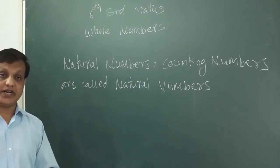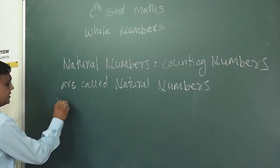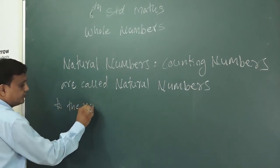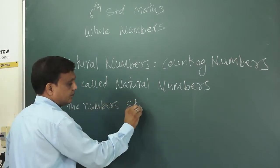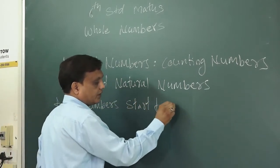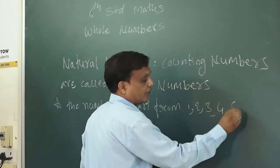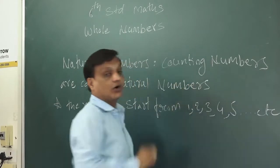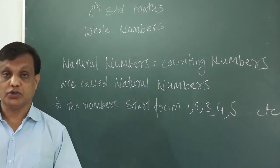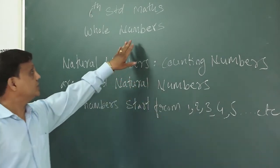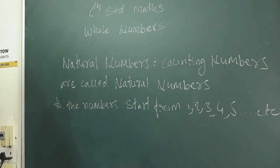The numbers which start from 1, 2, 3, 4, 5, etc. are called natural numbers. So simply, counting numbers are called natural numbers. Now we will come to our main point, that is whole number. First we will see the definition of whole numbers.